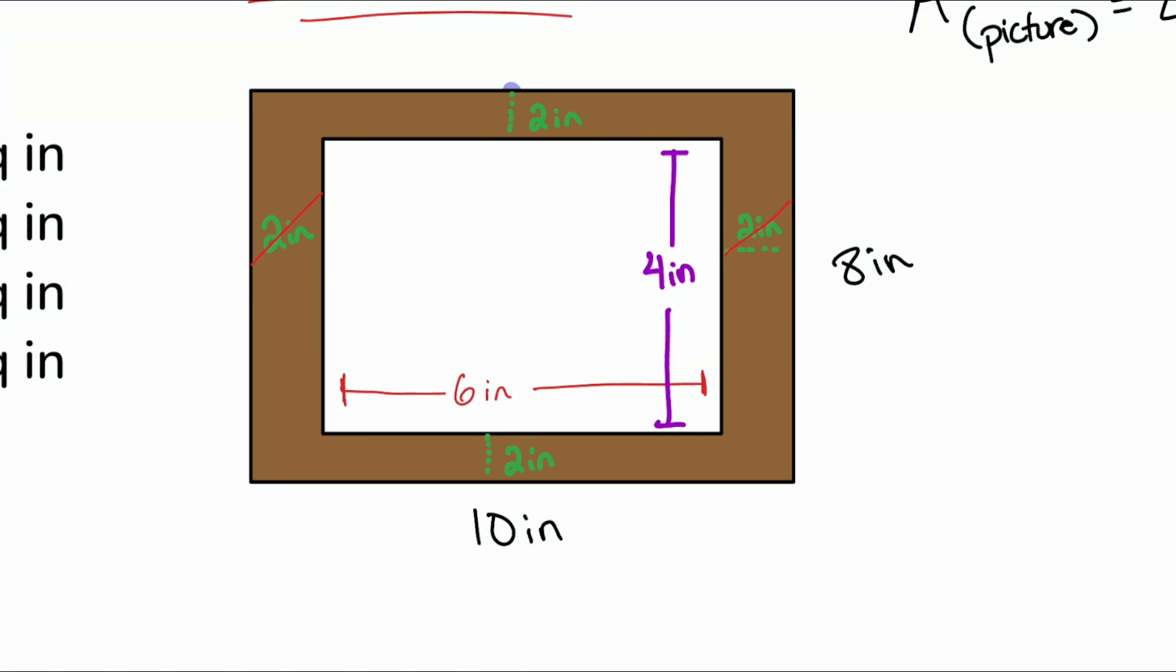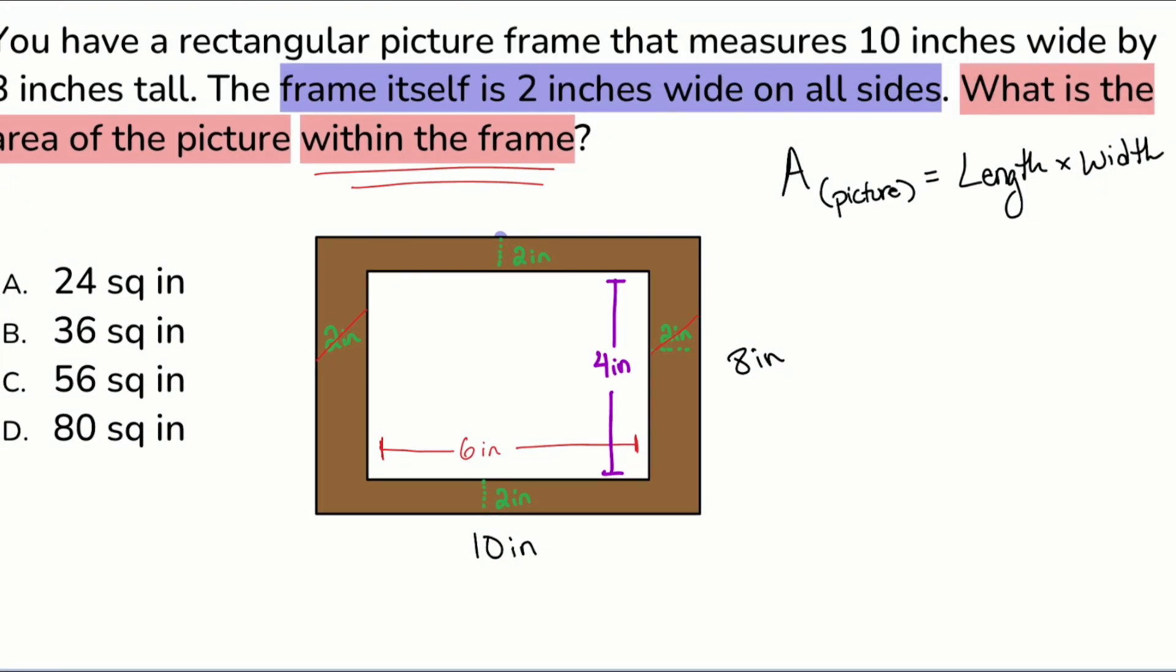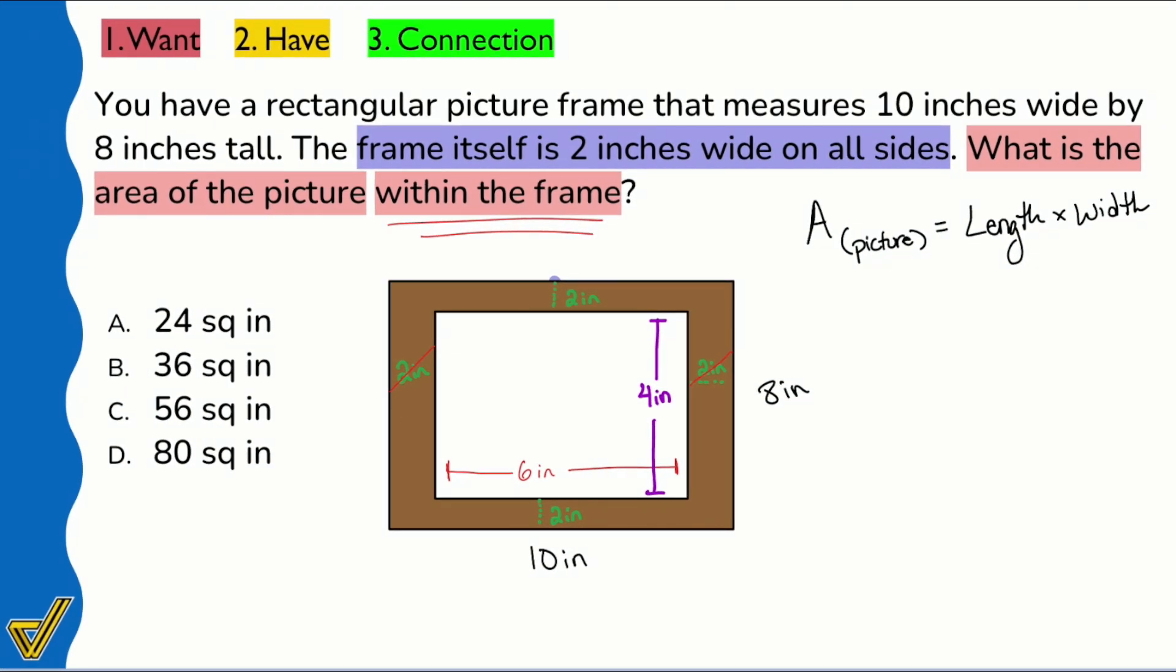We're good to go, and this problem is actually going to be very straightforward because we have 6 times 4. There's our length, there's our width, and we're good. 6 times 4, that'll be 24 square inches. And there we are, my math party people. That's our answer right there, answer choice A.